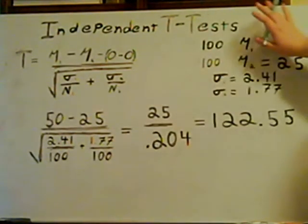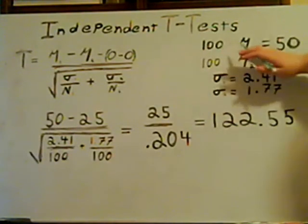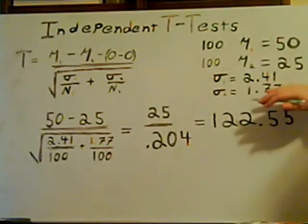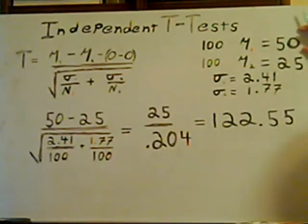The difference between independent and dependent t-tests is that the two samples do not rely on each other. Whatever happens in sample A will not affect whatever happens in sample B.